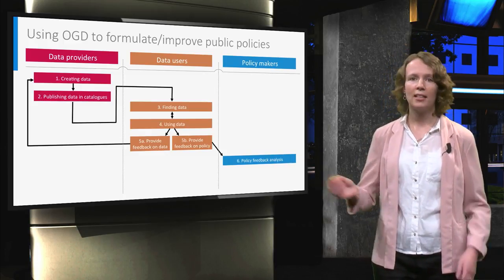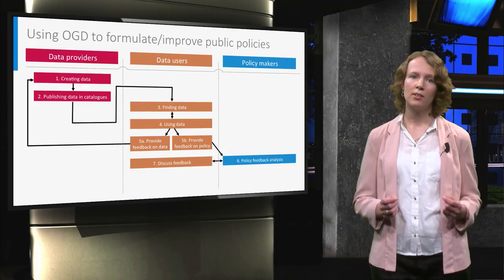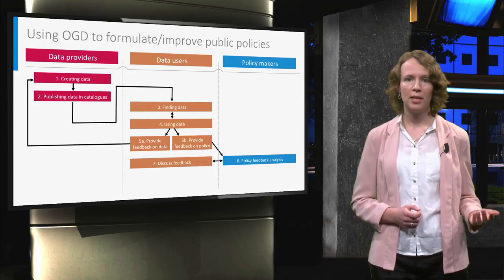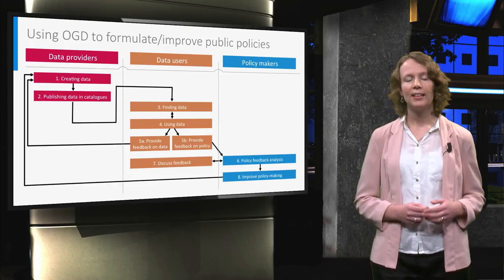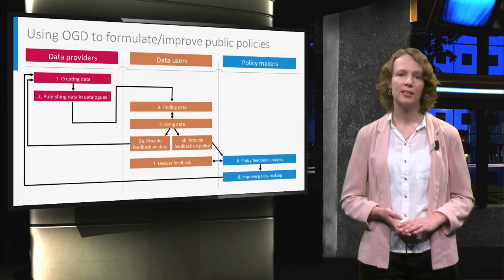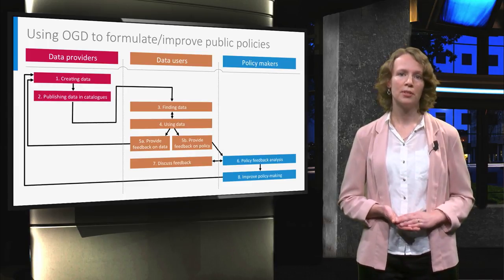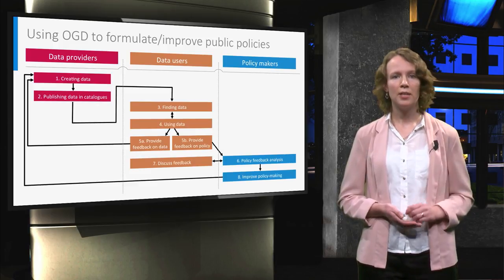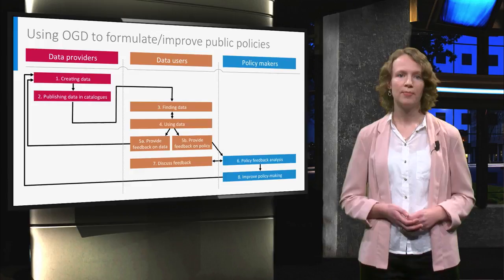Policy makers can analyze this feedback obtained through open data use, discuss it with data users, and subsequently, they can learn from these new insights obtained through open data use. The analysis and discussion of policy feedback might subsequently be used to formulate or improve public policies. This contributes to creating an open government, since the government interacts with citizens and other open data users in its policy making processes. This means that if governments want to use feedback derived from open data use for improving policy making processes, they need to publish this data in a way that makes it findable and reusable. Moreover, this requires feedback mechanisms that governments can use to find out how their data has been used and what can be learned from this.